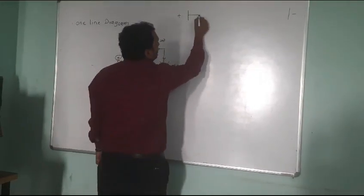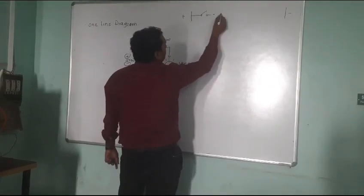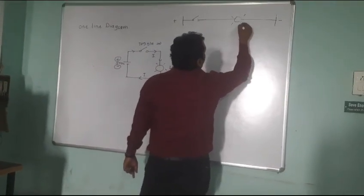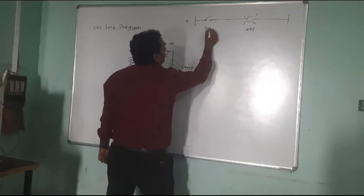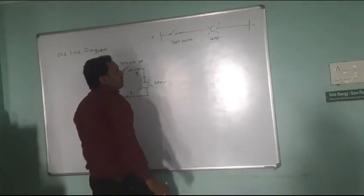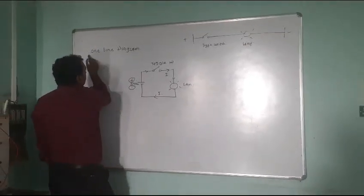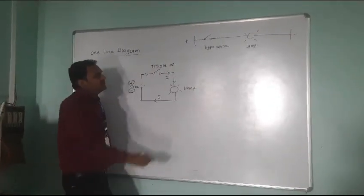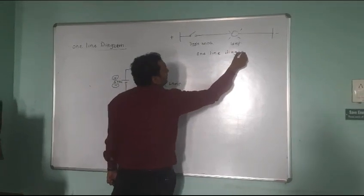So here, initially after DC plus 5 volt, there is a toggle switch. And then after the toggle switch there is a lamp. This entire thing is nothing but a one line diagram. So you can understand what is called a one line diagram. This circuit, when converted in such a fashion, is your one line diagram. For the existing circuit, you can draw a typical one line diagram like this.